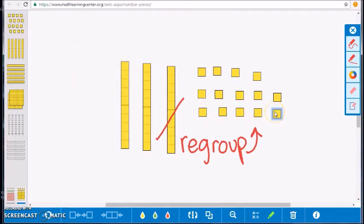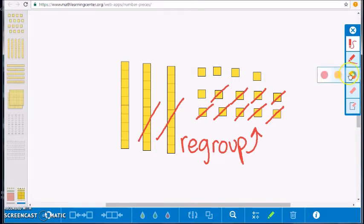After regrouping we have 14 ones and two tens. We can now take away the 19 stickers by removing nine ones and one tens block. We have one ten block left and five ones left.